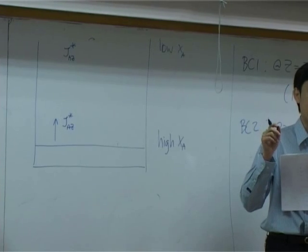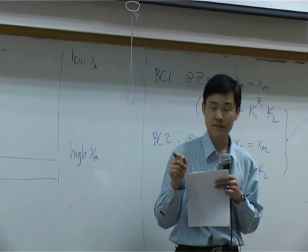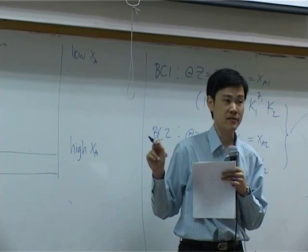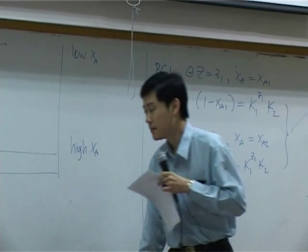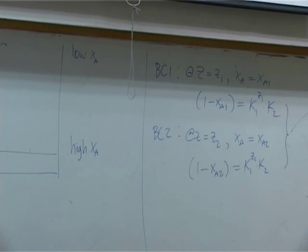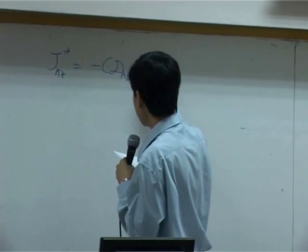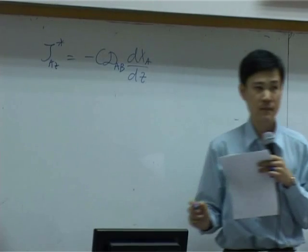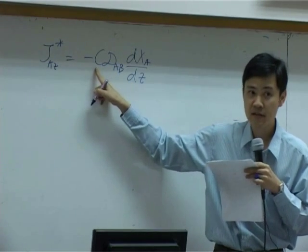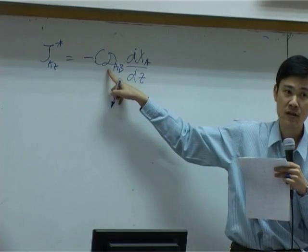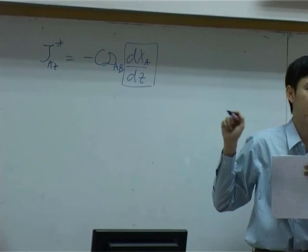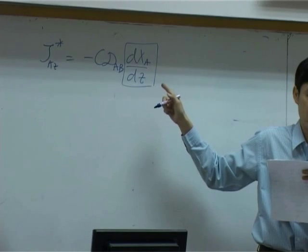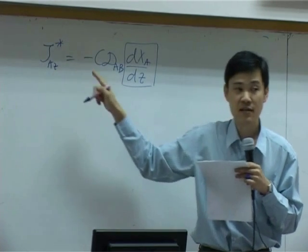We know that the combined flux N_A is constant, but J_A may not be constant — it depends on driving force. By definition, J_A* equals minus C·D_AB·(dX_A/dZ). We know total concentration C is constant and diffusion coefficient is constant, but the differentiation term dX_A/dZ is not constant — it does change with respect to Z. So therefore J_A* is not constant.